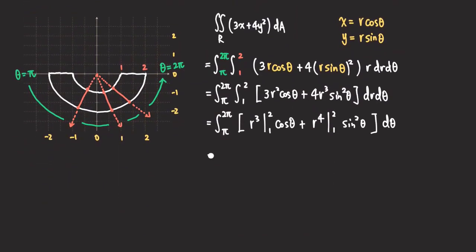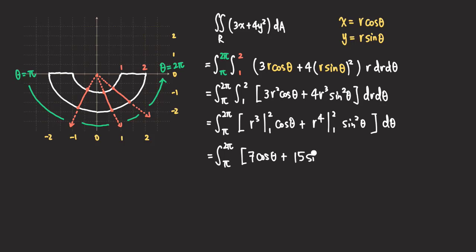Continuing the calculation, integrating from π to 2π: plugging r = 2 gives 8, plugging r = 1 gives 1, so 8 - 1 = 7. We get 7 cosθ. For the second term, plugging in r = 2 gives 16, and r = 1 gives 1, so 16 - 1 = 15. We get 15 sin²θ dθ.